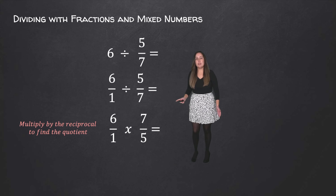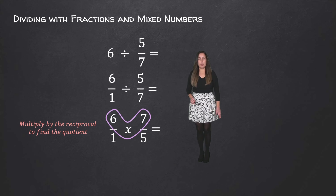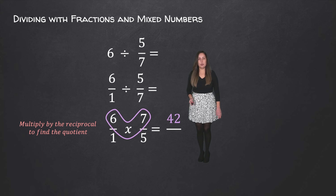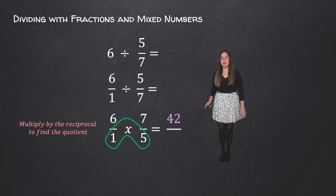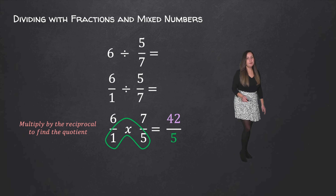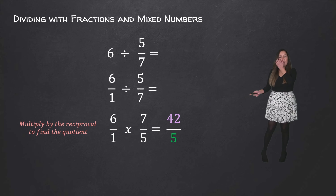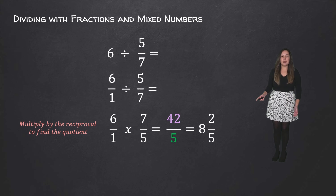Then we're going to multiply our numerators. 6 times 7 is equal to 42, and then multiply our denominators. 1 times 5 is equal to 5. So here we have an improper fraction, so we have to rewrite it so that it's a mixed number. So 42 over 5 is equal to 8 and 2 over 5.